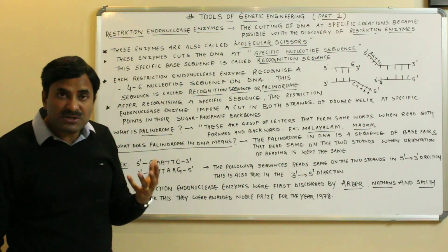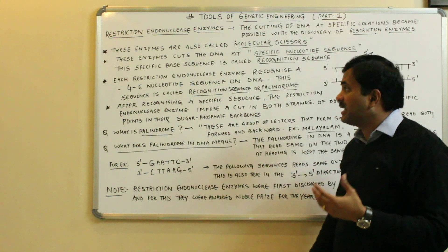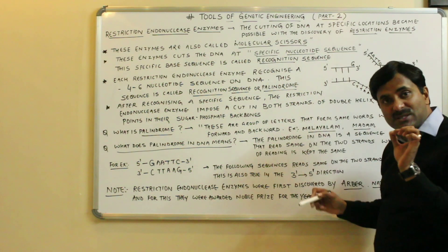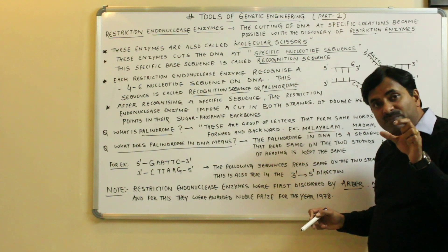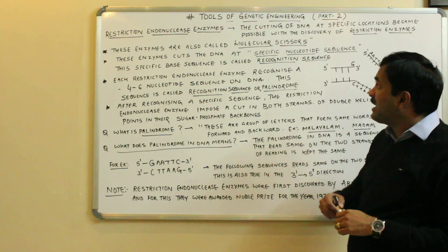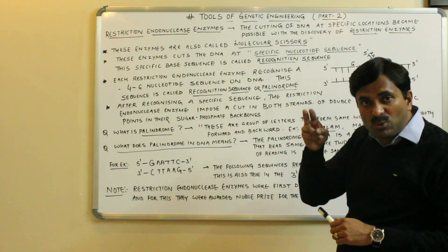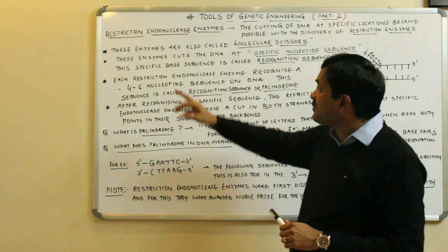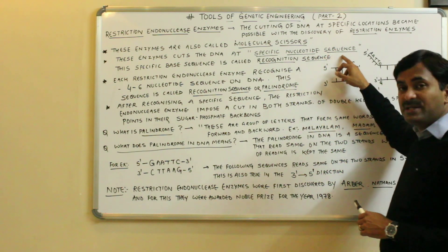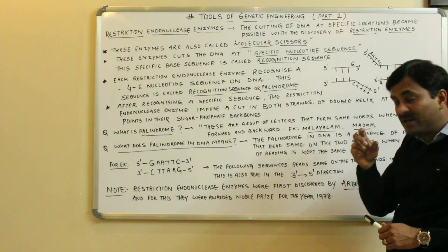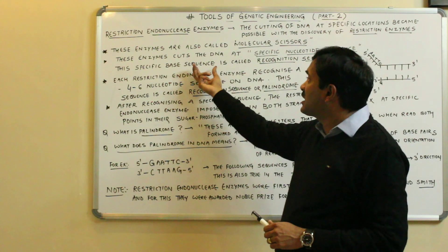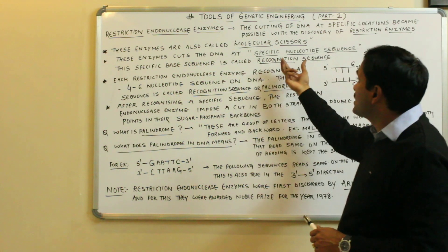These enzymes cut the DNA at a specific nucleotide sequence. A restriction endonuclease enzyme will first inspect the entire length of the DNA, and after recognizing a particular sequence it will cut the DNA. So these enzymes cut the DNA at specific nucleotide sequences — they first inspect the length of the DNA and then recognize a specific nucleotide sequence.